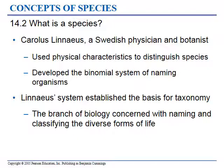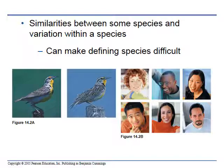He came up with that, and the whole branch of science is called taxonomy, which is the branch concerned with naming things. When we classify and name organisms, that's taxonomy. Naming species and figuring out what a species is can be difficult.